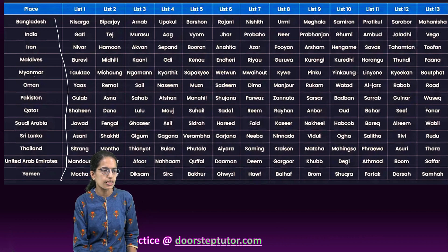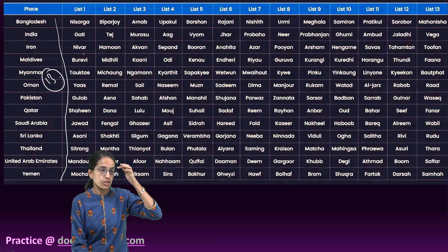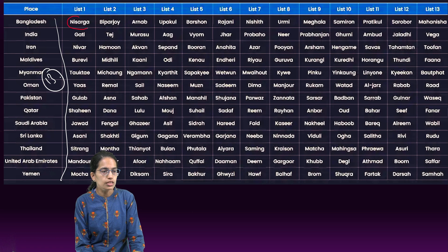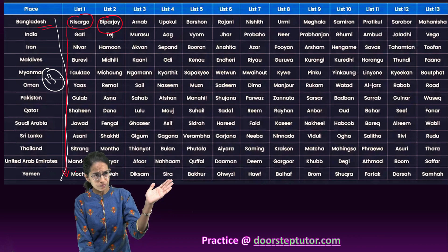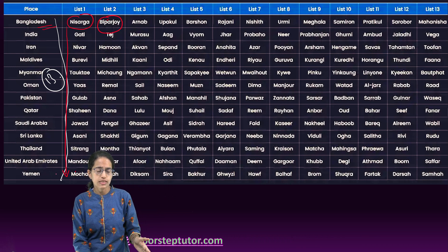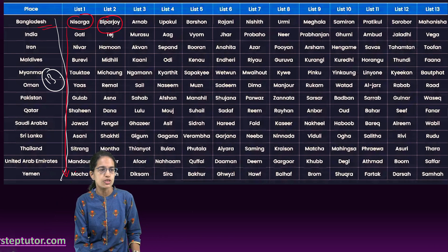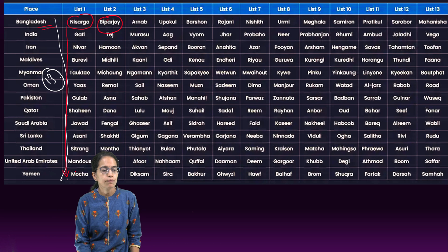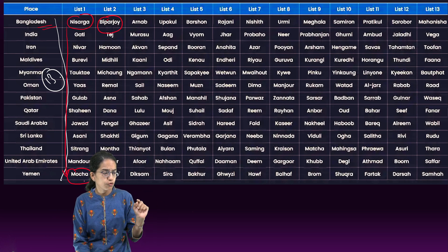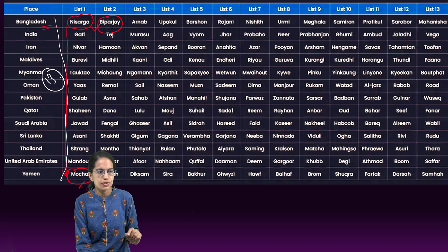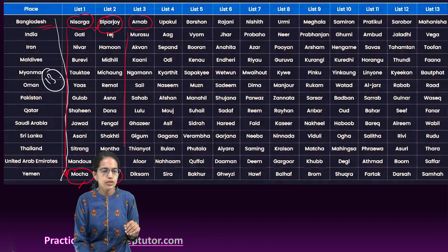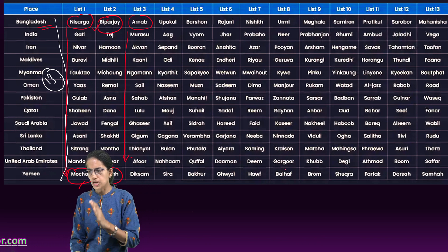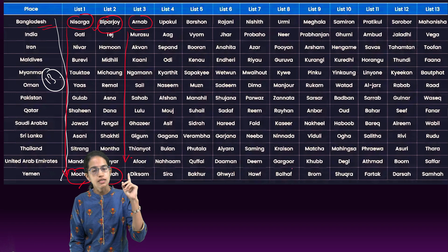There are 13 nations on the coast of the Indian Ocean involved in this naming process. The first name in the new series was Nisarg. This time we are expecting Biparjoy, and this name was given by Bangladesh. Each of the 13 nations suggests 13 names. Once the end of the first list is reached — that is Mocha — the second list starts. In the second list, when Dithwa is reached, the third list with Arnav would begin, and the sequence continues.